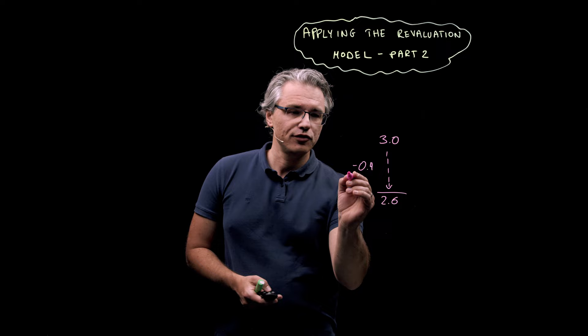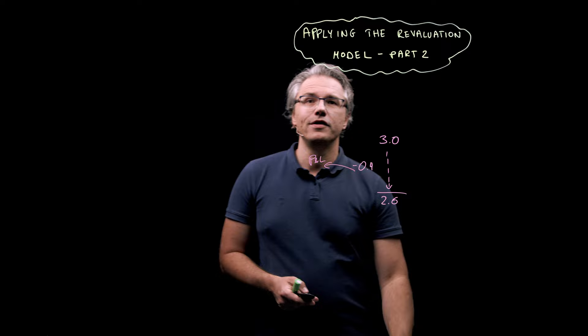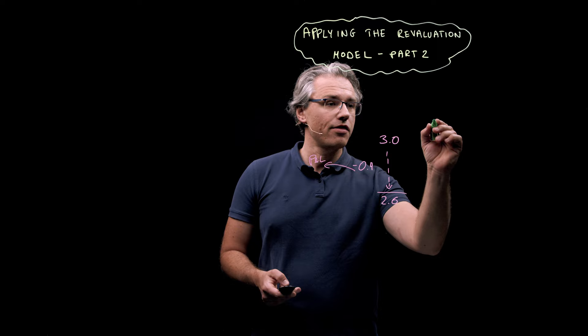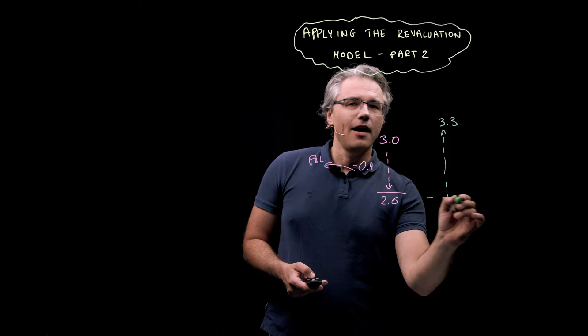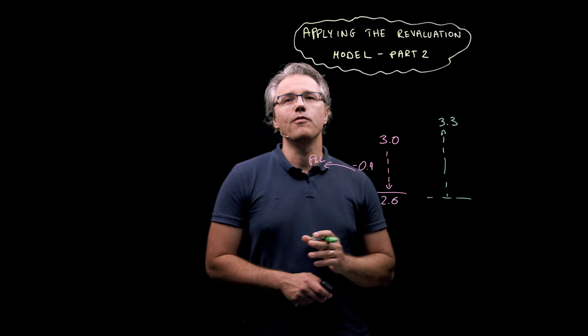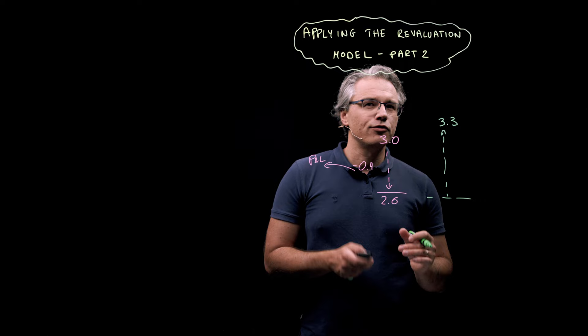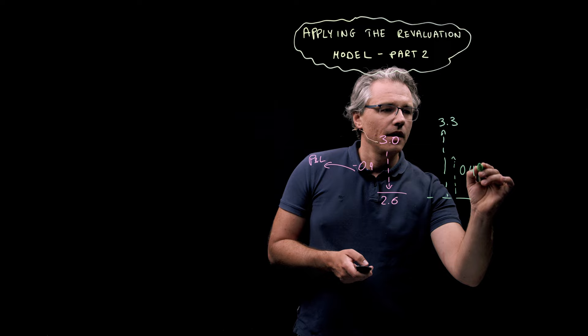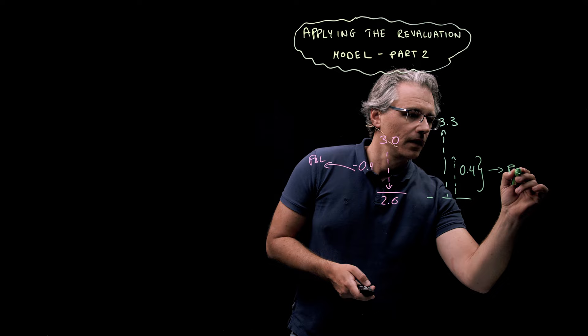Now, at the end of the next year, the asset's fair value is estimated to be 3.3 million. So, that's an increase. And to the extent that this increase reverses the previous drop, which was already taken to earnings, that's the drop of 0.4 million, this is dealt with via P&L. So, let me draw an upward arrow with 0.4 million and write P&L next to it. And this is obviously a plus, so a gain going to P&L.